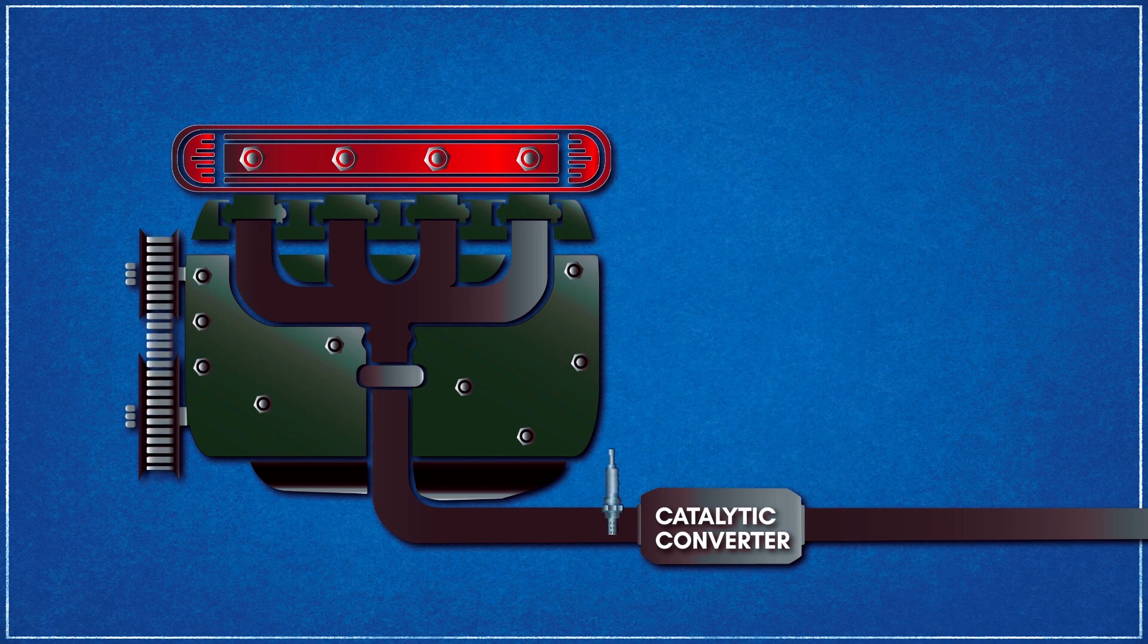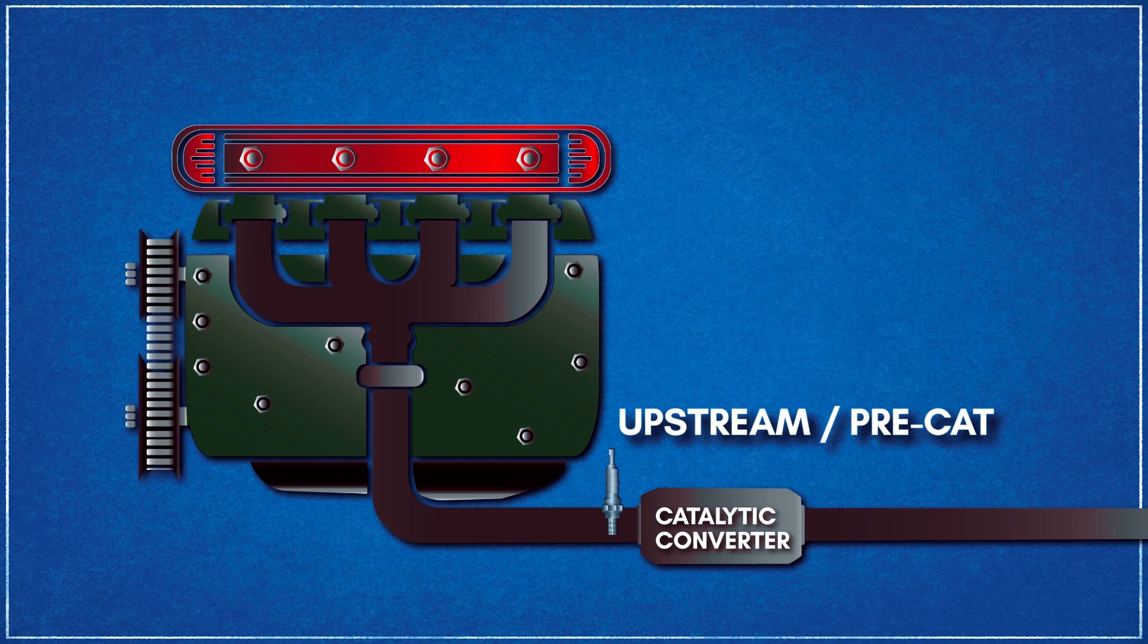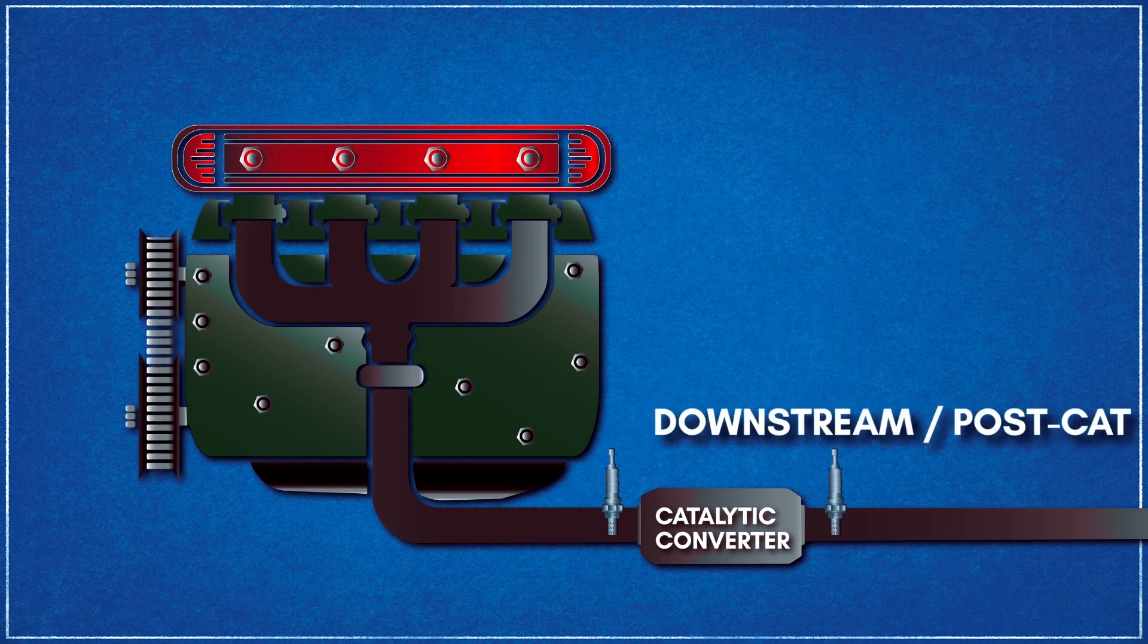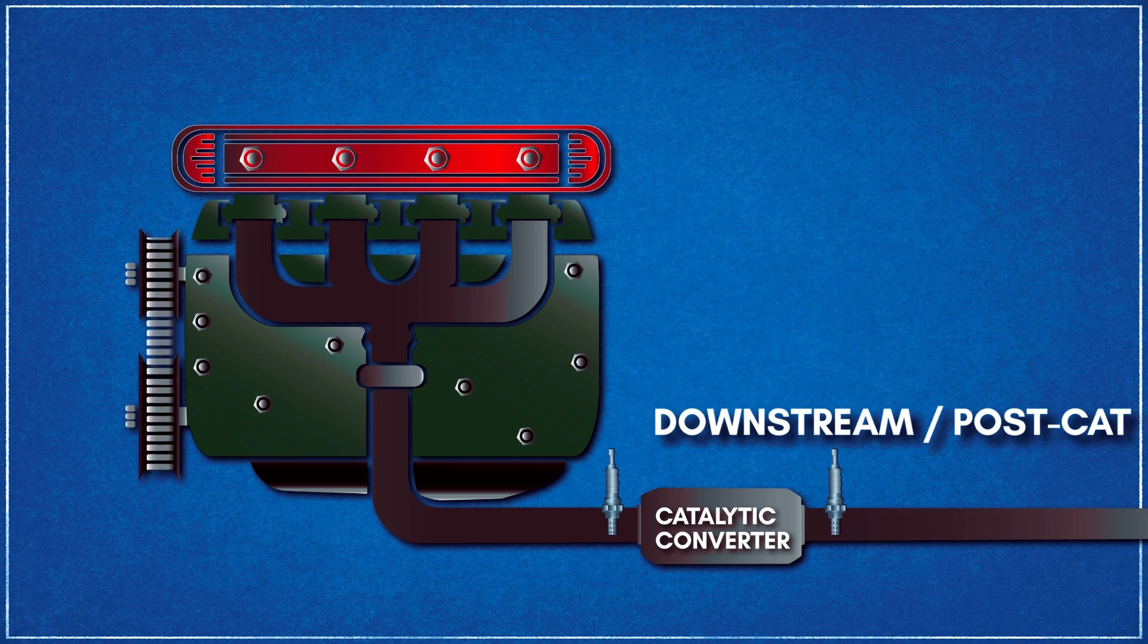One sensor is placed before the catalytic converter. This sensor, also known as the upstream or pre-cat sensor, is responsible for regulating the optimal fuel supply. And the second sensor, which is referred to as the downstream or post-cat sensor, is located just after the catalytic converter and monitors the efficiency of the cat.